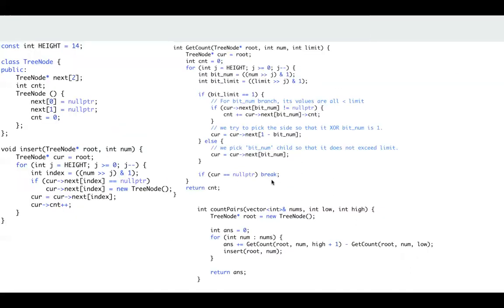Then the main function is pretty simple and clean. We just loop through each number, and for each number, we try to get some count here, and we insert it into our tree. That's it. See you next time.